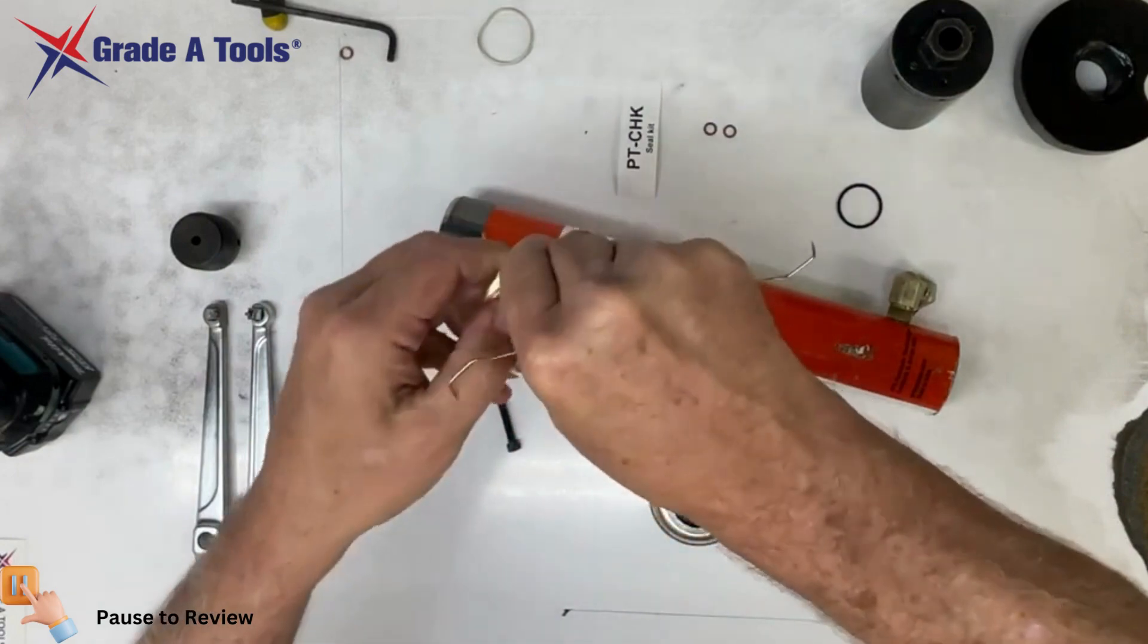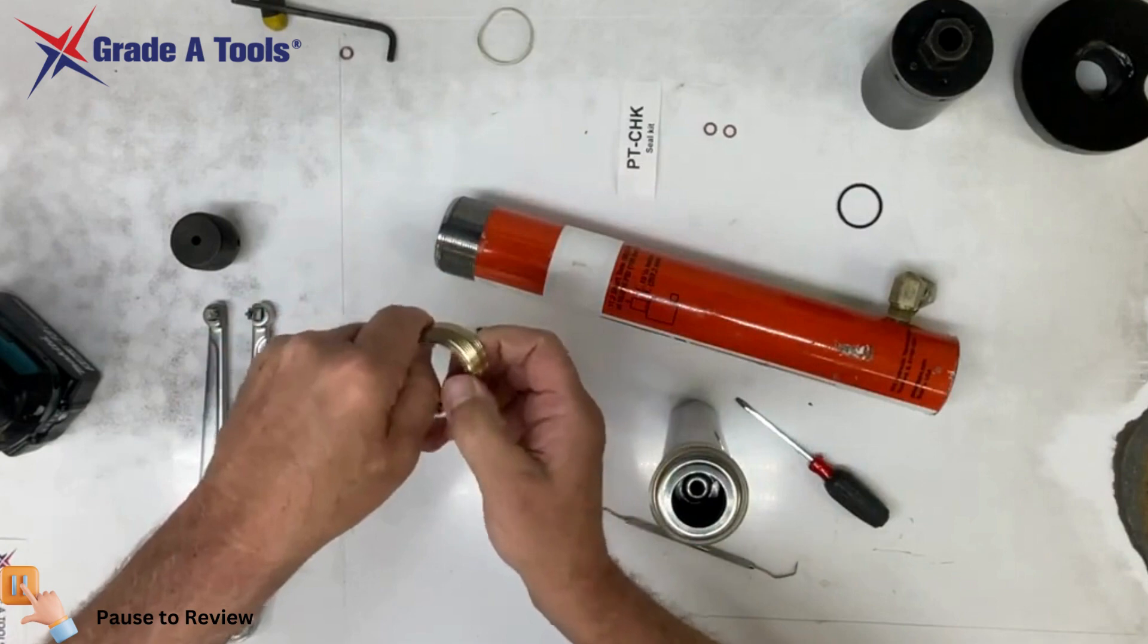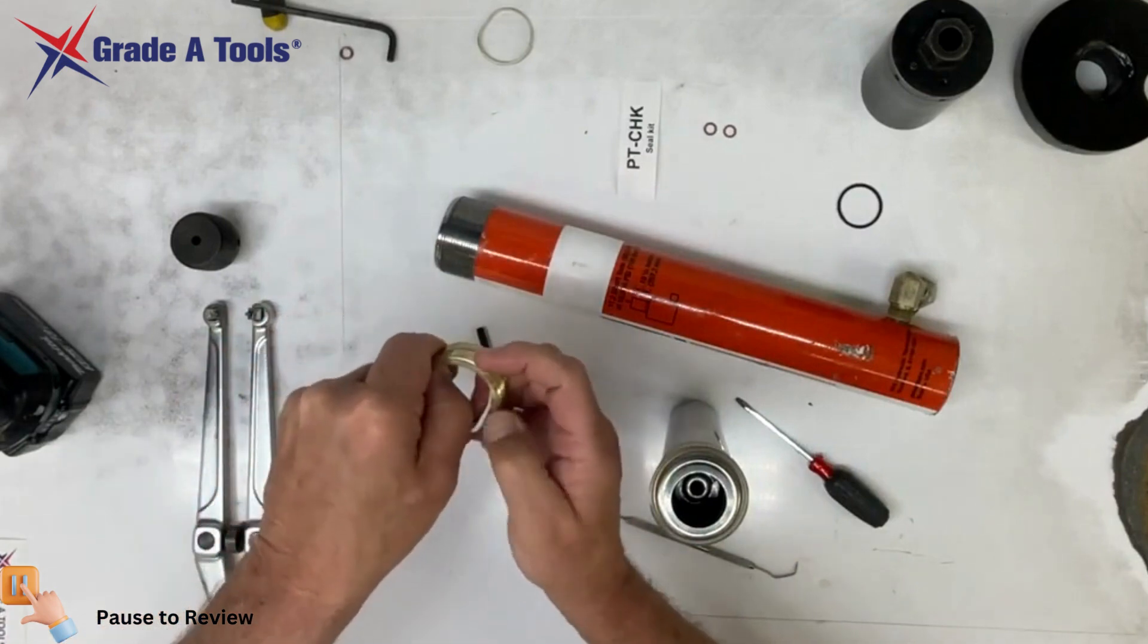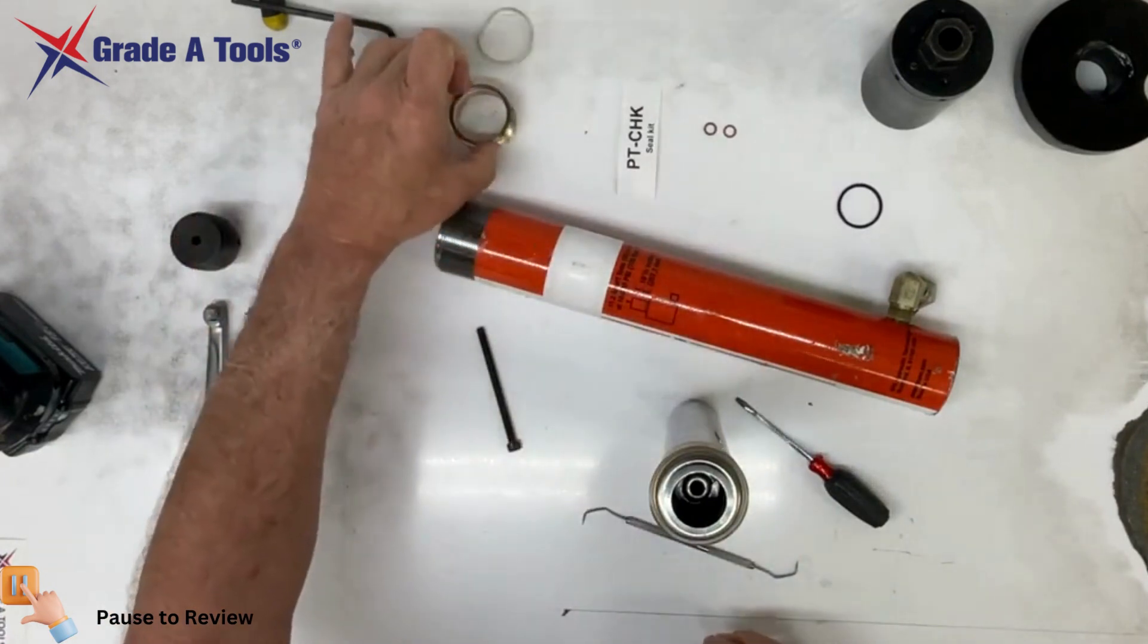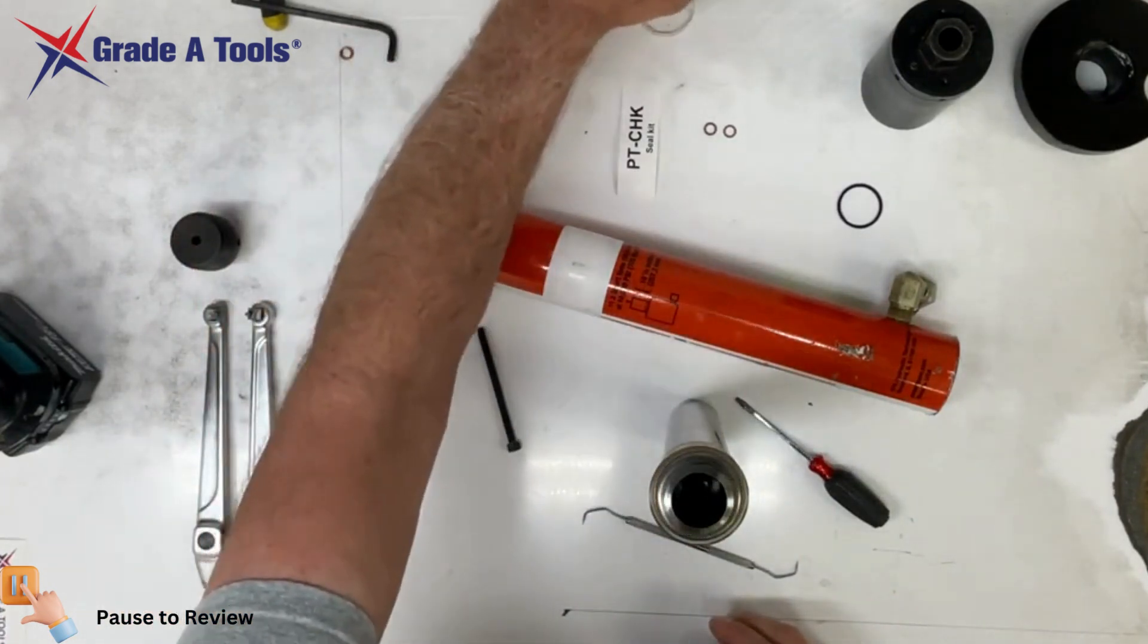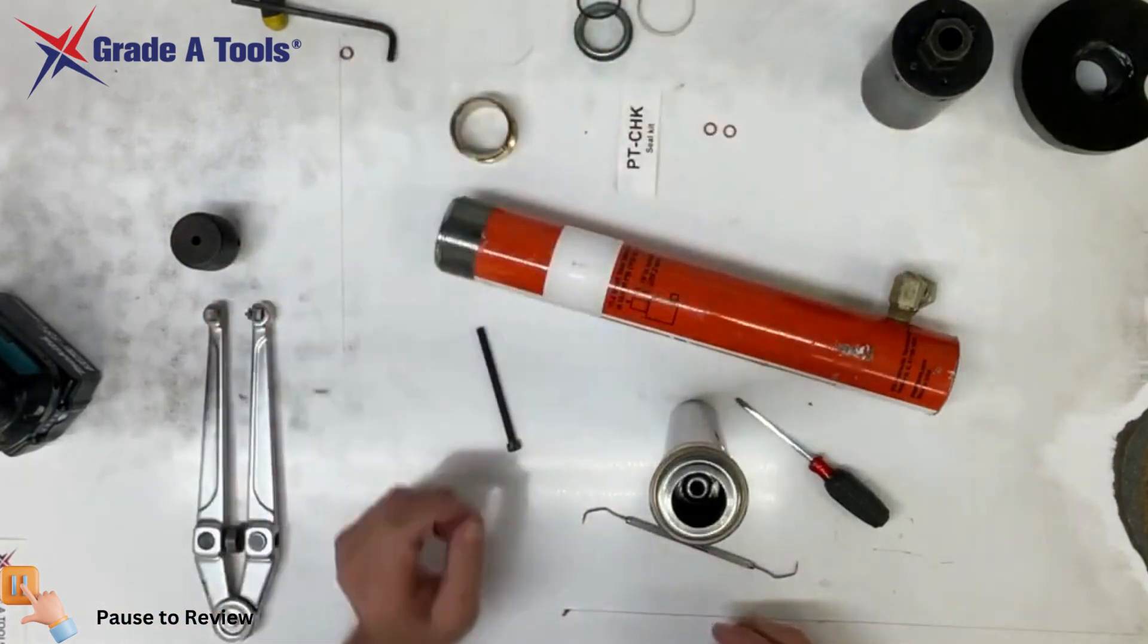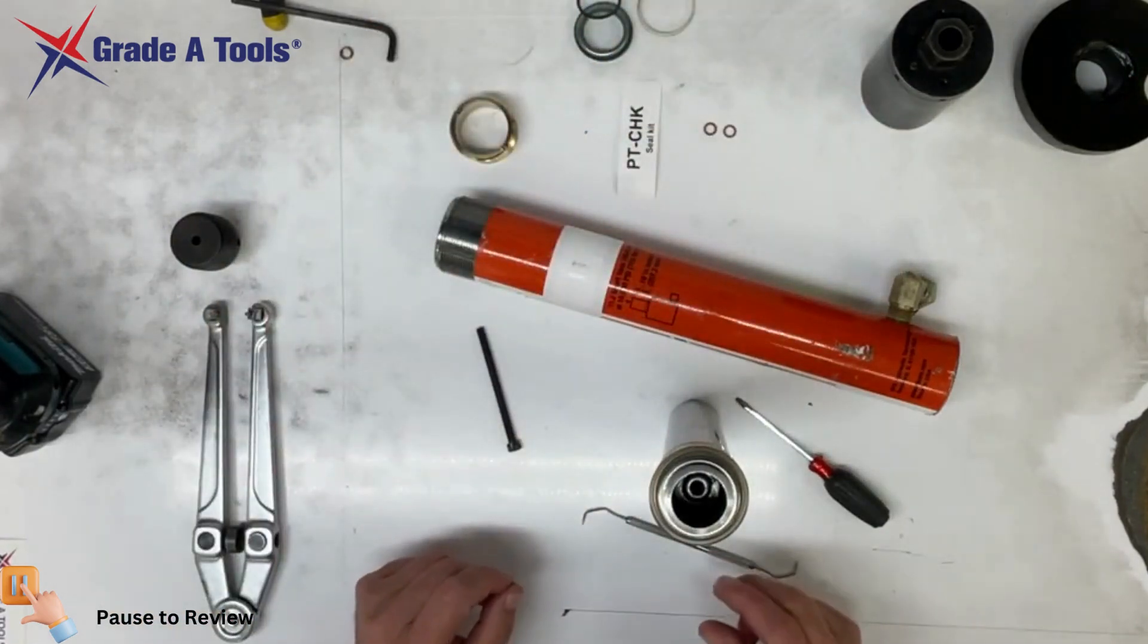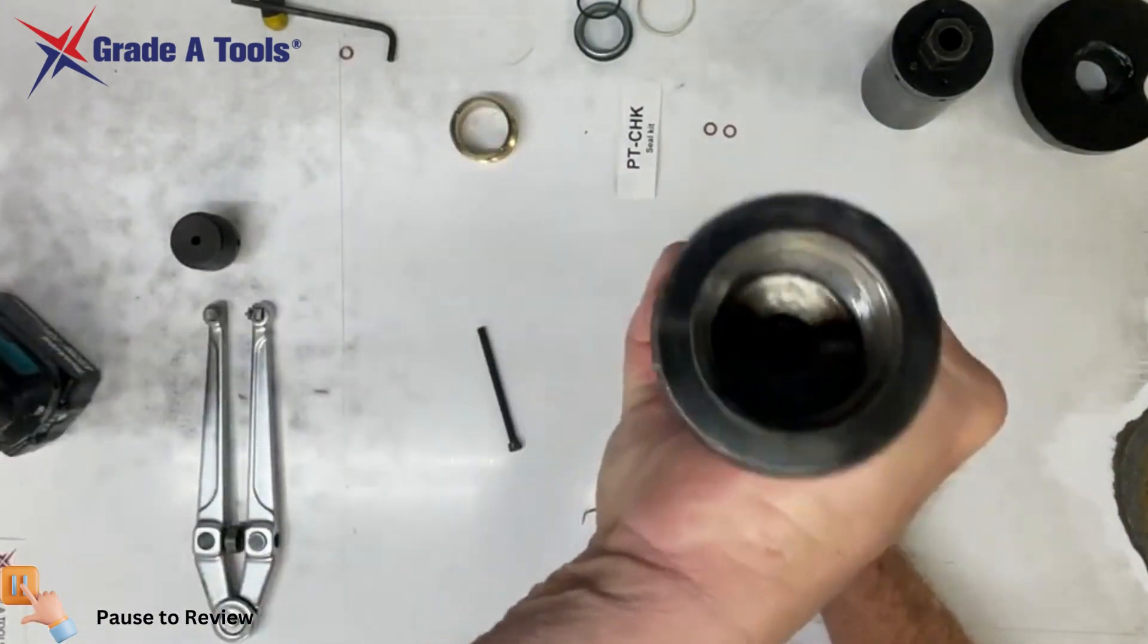So now you have replaced your wiper, your seal, and everything. The only thing left to do now is to put the cylinder back together. You'll slide this back in.